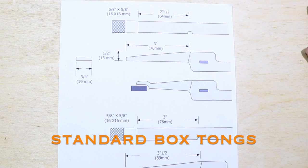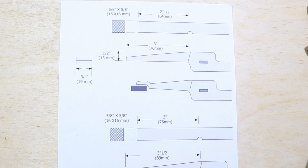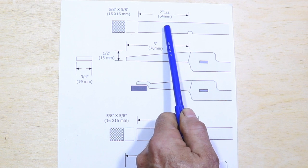Standard box tongs are used to hold wider pieces of flat bar, and for these tongs the jaw that's holding the box is usually assembled in two pieces.